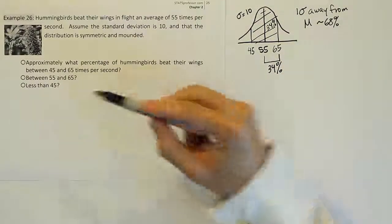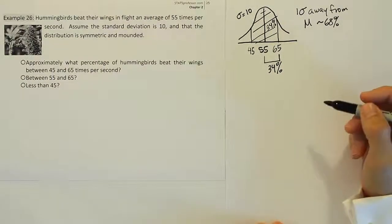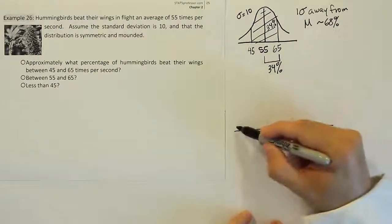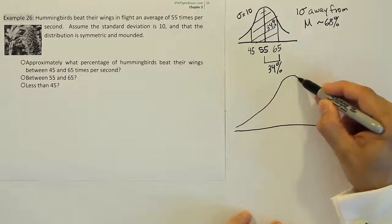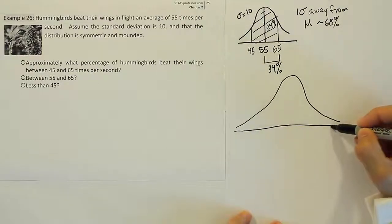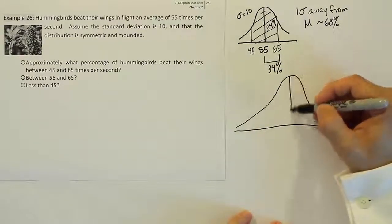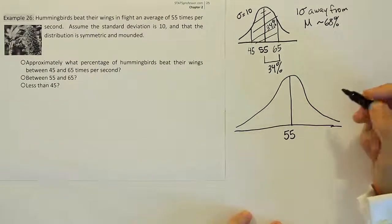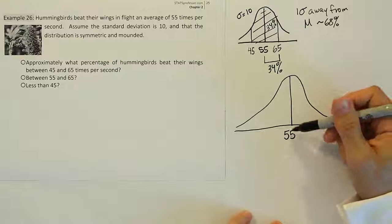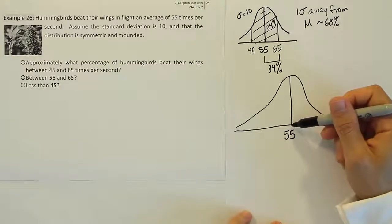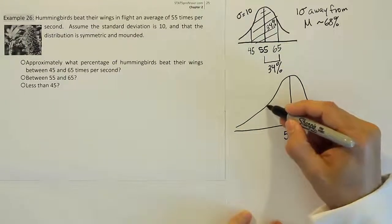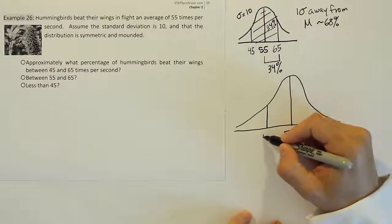And then finally the last part, less than 45. Let's do a new drawing for that one. So draw the bell curve, and again we'll label in the middle the mean. The mean is 55. Now to do what we did before, we'll start counting down standard deviations. So let's go backwards because we're looking for 45. If I take one standard deviation away, I get 45.